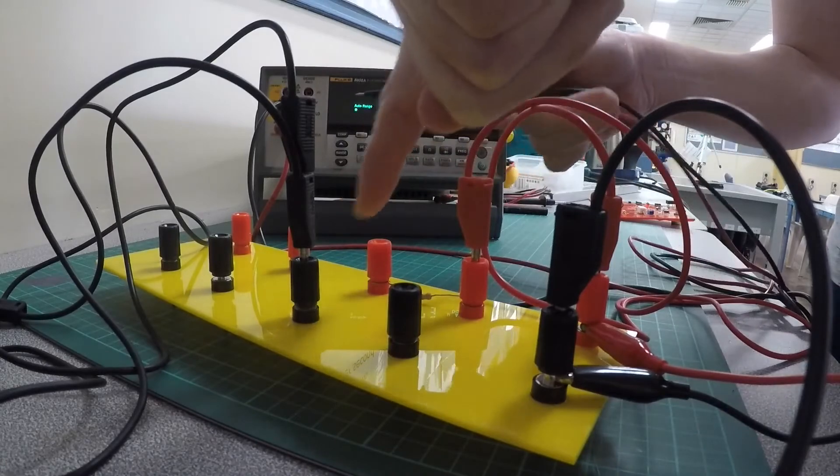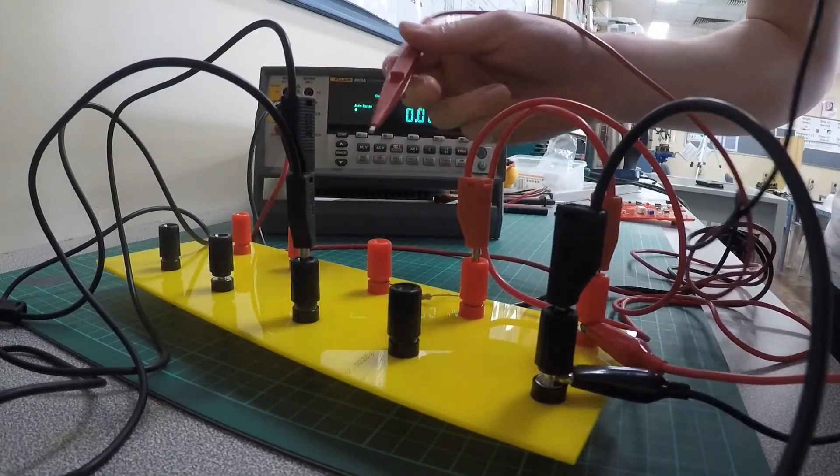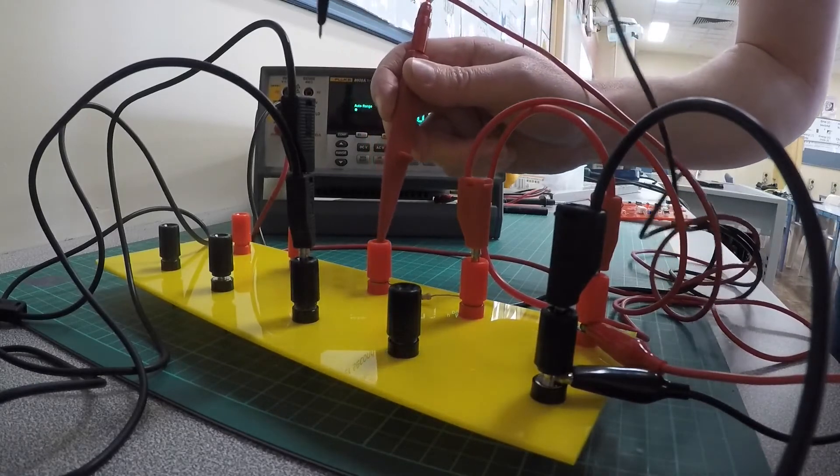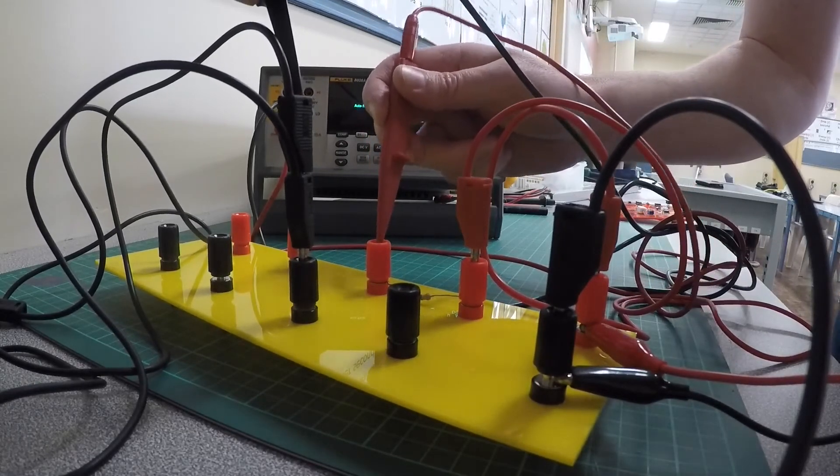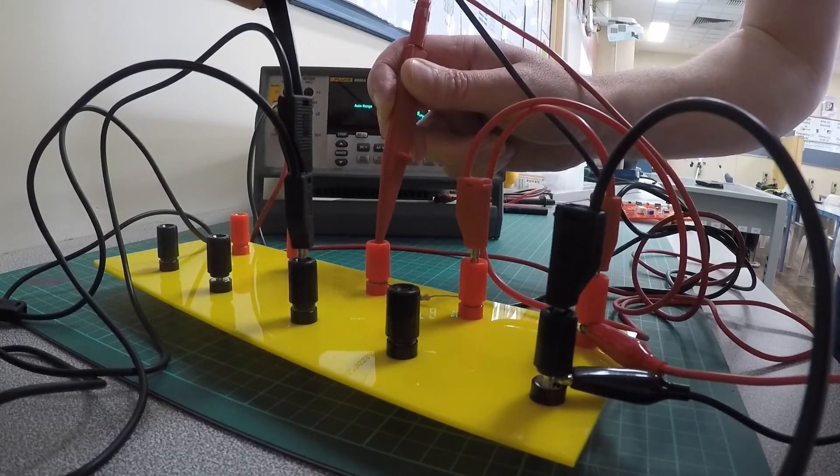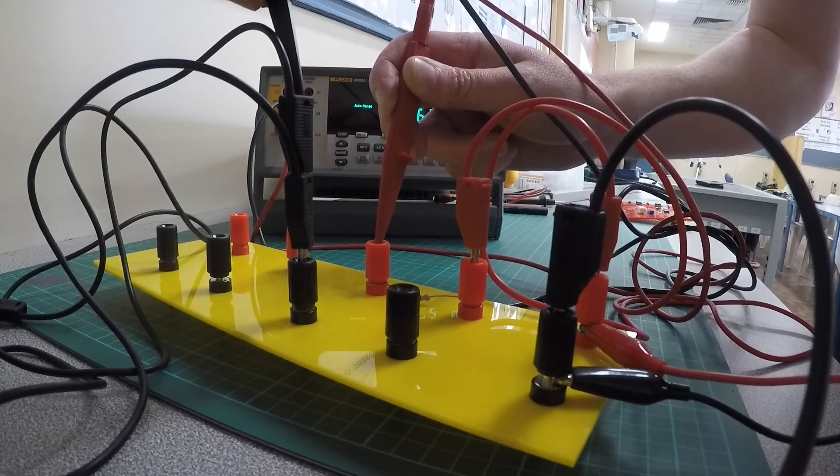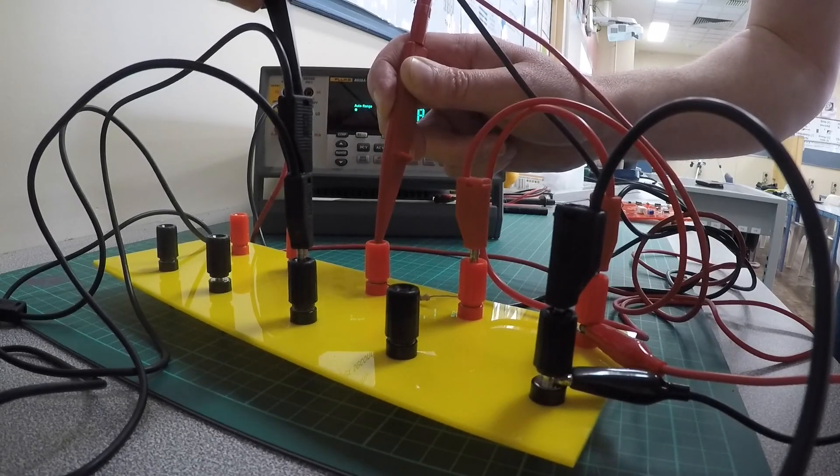So now the circuit is broken. There's no current going through. So I need to put these probes in line with the circuit. And that is 12.3, 12.4 if we round it off, milliamps.